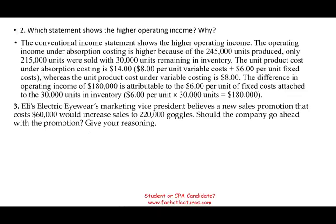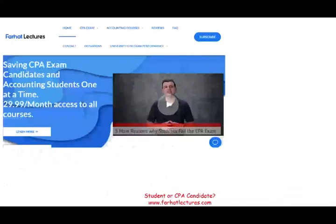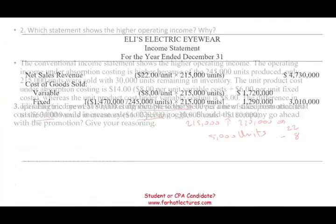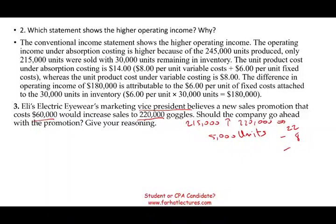Now let's look at the third question. Eli Electric Eyewear's marketing VP believes a new sales promotion costing $60,000 would increase sales from 215,000 to 220,000 units. Should the company go ahead? We need to find the contribution margin on the additional 5,000 units. Selling price is $22, variable manufacturing cost is $8, and sales commission is $5, giving a contribution margin of $9 per unit.